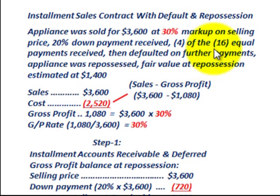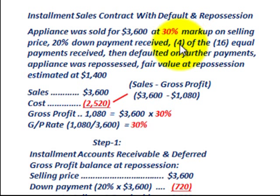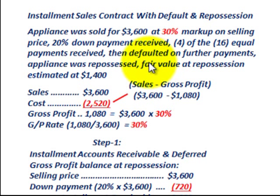There were 16 payments on this contract, and the purchaser actually paid four of those payments. But after the fourth payment, they defaulted — they didn't pay any more — and the store repossessed the appliance.